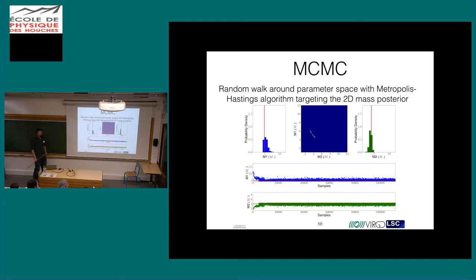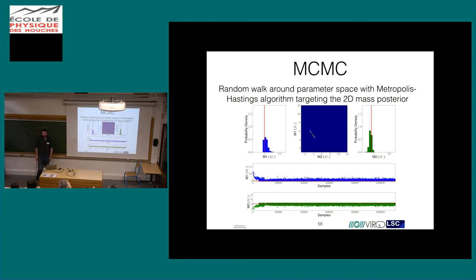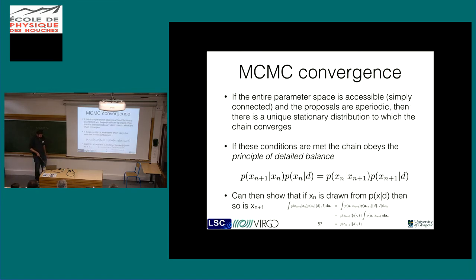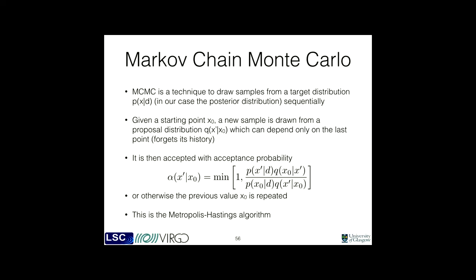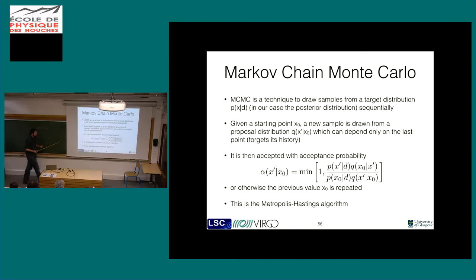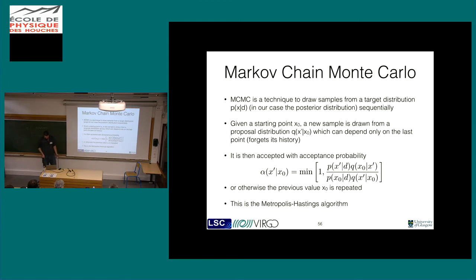A question was raised: you mentioned log likelihood but said you were sampling the posterior - where does the prior come in? We're sampling the posterior distribution, so it should be the log posterior. In the Metropolis-Hastings formula, the P's and Q's: the Q is how you jump from one point to another, and the P is the thing you're trying to sample - which is the posterior. The difficulty basically comes down to picking a Q that works well, or picking a combination of different Q's that work well for the problem.